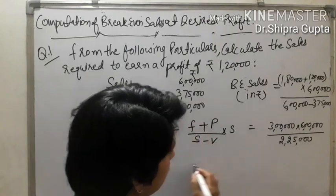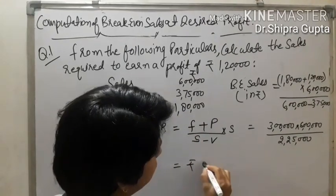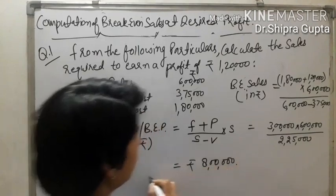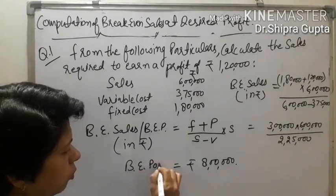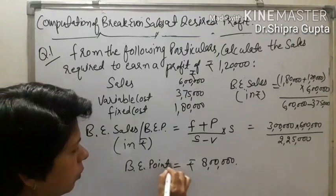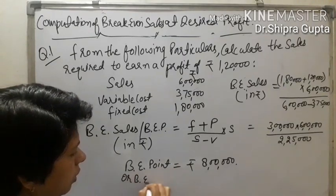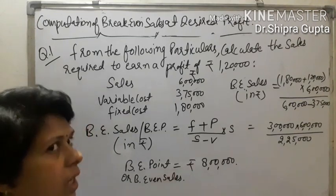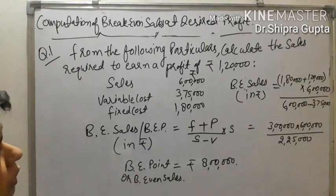Solving this, the value comes to rupees 8,00,000. So the answer is: Break-Even Sales = rupees 8,00,000. Now we will do another question on this topic.